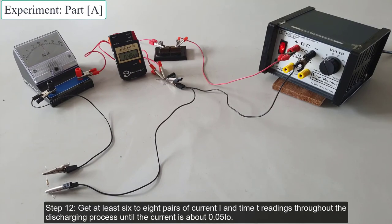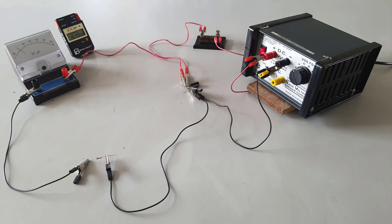Get at least 6 to 8 pairs of current I and time T readings throughout the discharging process until the current is about 0.05 I not.